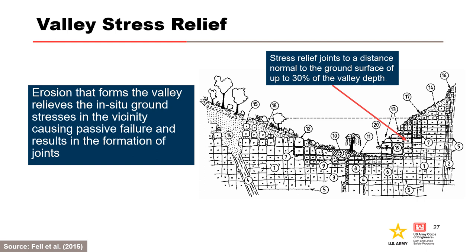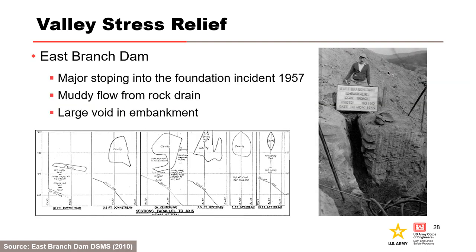One way rock defects are commonly formed in river valleys is due to stress relief. Erosion that forms the valley relieves the in situ ground stresses in the vicinity, causing passive failure and resulting in the formation of joints. This is very common in sandstone or shale geology. Vertical joints are typically oriented along the valley walls, thus creating upstream to downstream seepage pathways. A good example of valley stress relief is East Branch Dam, where major stoping into the foundation occurred in 1957 — the volume of the resulting void was the size of a school bus.